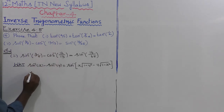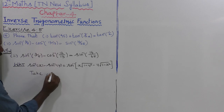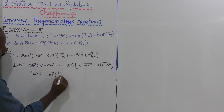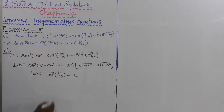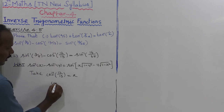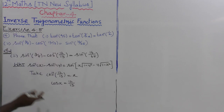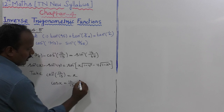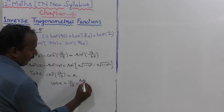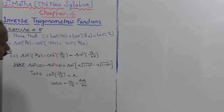Now let us take the cos term. Let us take cos inverse of 12 divided by 13 equal to X. Next, cos X is equal to 12 by 13. Cos is equal to adjacent side divided by hypotenuse.